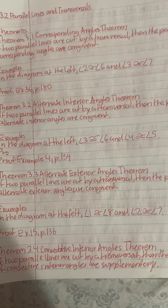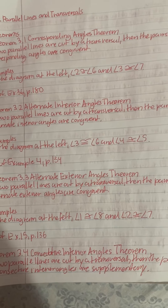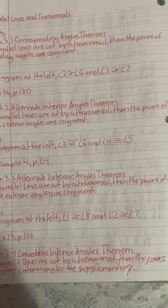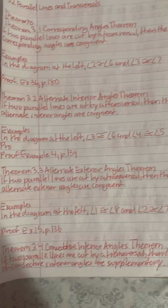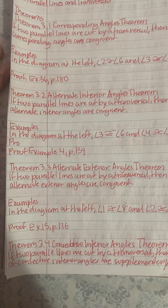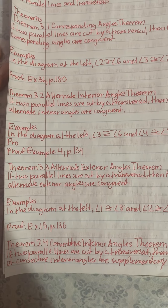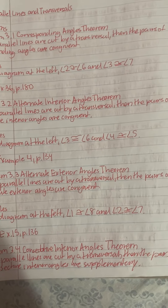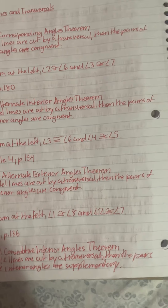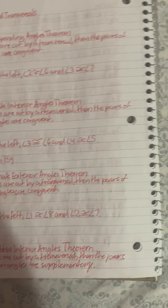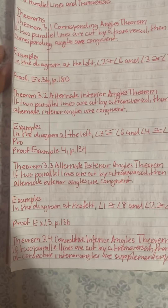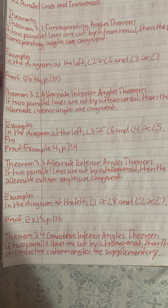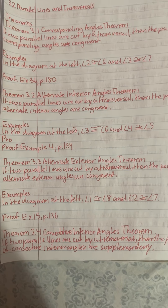Theorem 3.3, Alternate Exterior Angles Theorem: If two parallel lines are cut by a transversal, then the pairs of alternate exterior angles are congruent. Examples: In the diagram at the left, angle 1 is equal to angle 8, and angle 2 is equal to angle 7. Proof. Example: 15P136.